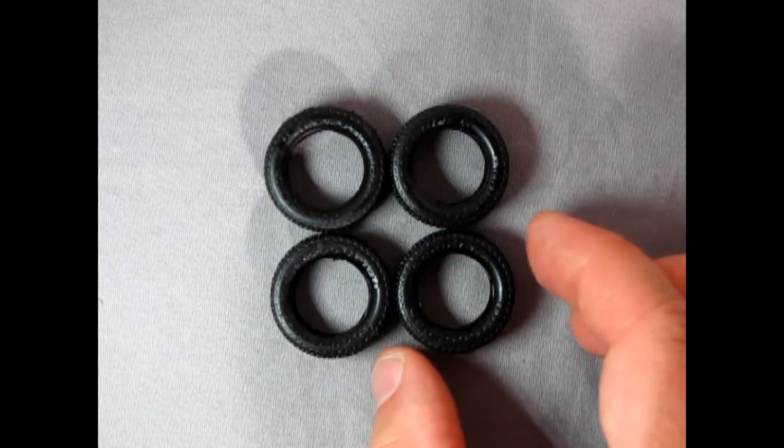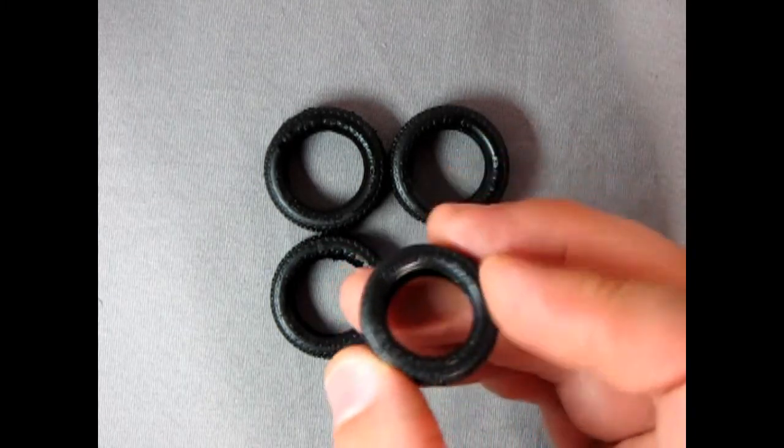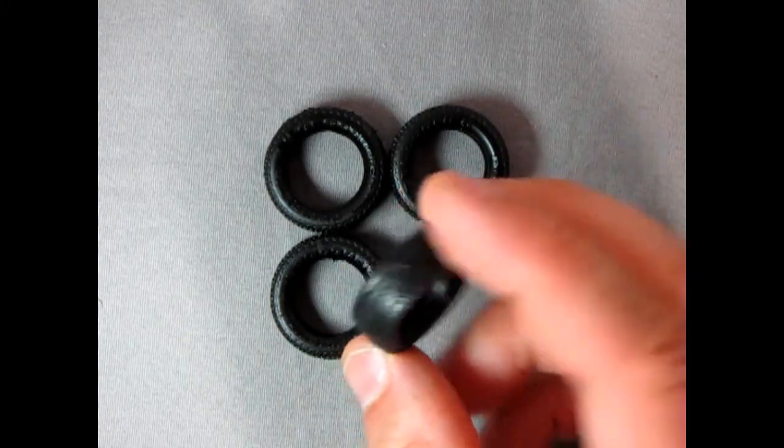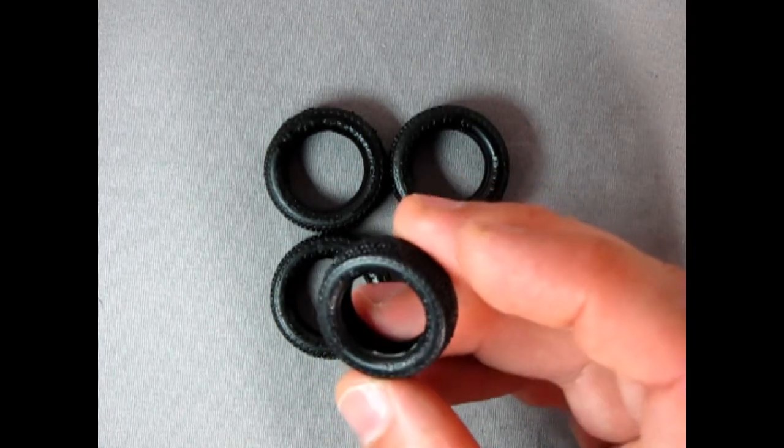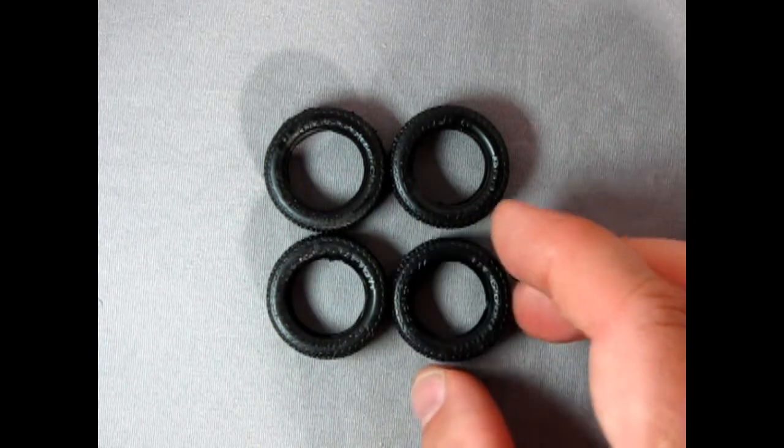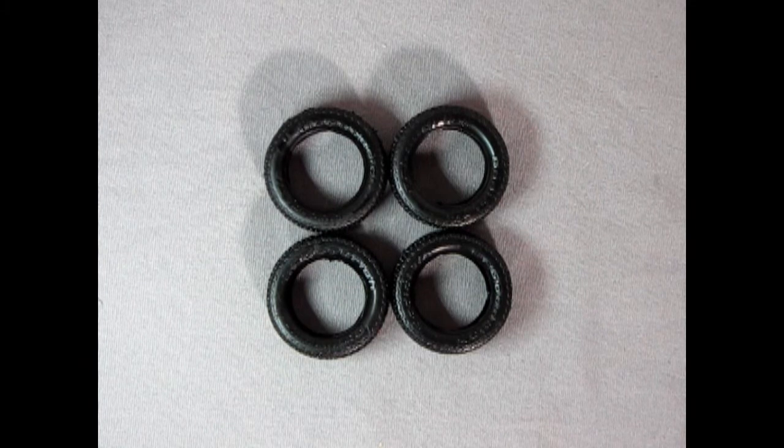Finally we have our BF Goodrich Radial TA tires and they have the nice lettering on the sides there. And a very nice tread pattern on this. These are very typical of the 1970s tires. The BF Radials would have been brand new around this time period and again these will look very nice on your model car.